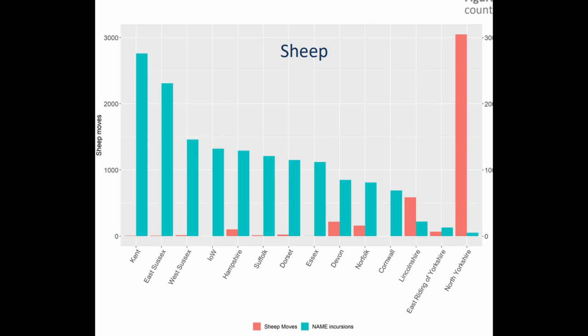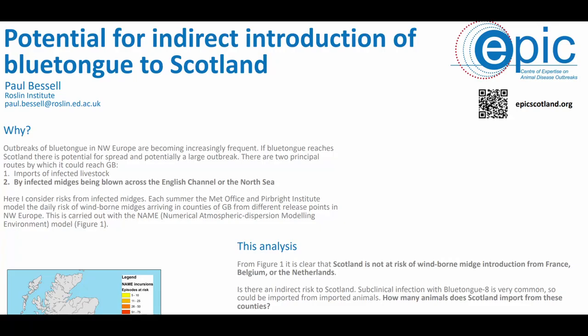So overall, this gives us reasonable assurance that there's very low risk of this indirect route of introduction from infected midges being carried across the channel. But this could be expanded to a more formal quantitative risk assessment to look at the durations of infection, the likelihood of detection, and potentially also if animals were to stop en route — for example, if an animal were to move from Kent to Cumbria and then on to Scotland, what would this profile look like? But the preliminary results here suggest that this is a minor concern. Thank you for taking the time to listen to my talk.